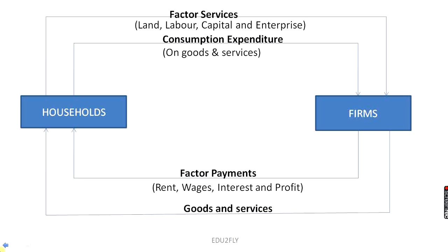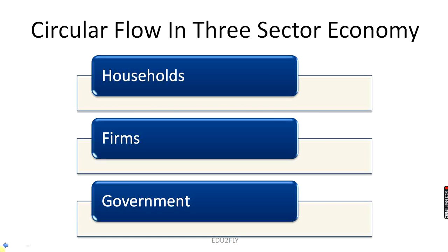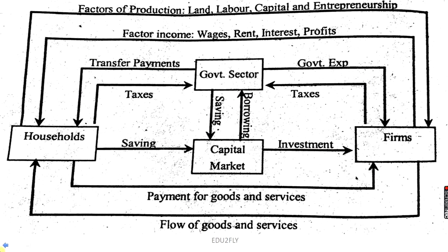Next is the circular flow in the three-sector economy. There is interaction between the household, firms, and the government. In this diagram you can see the household, firm, and government sector, and also the capital market or financial market. The circular flow in the two-sector economy was without the financial market. Now here we have added the financial market, and the government plays a very important role in the economic development of the country.